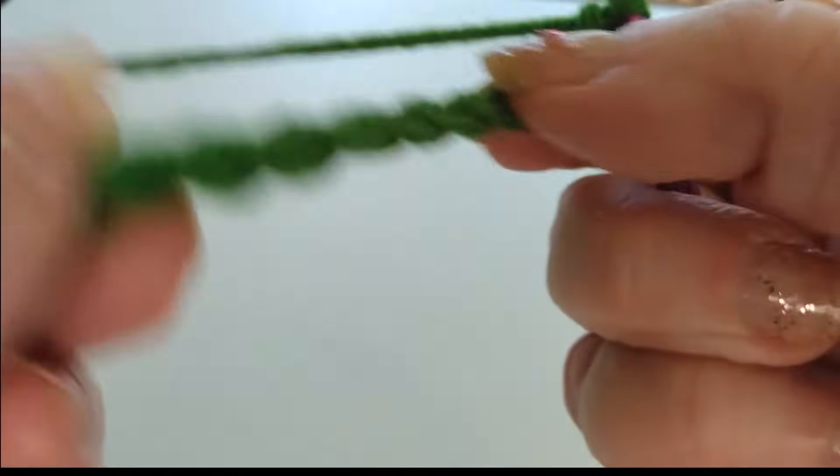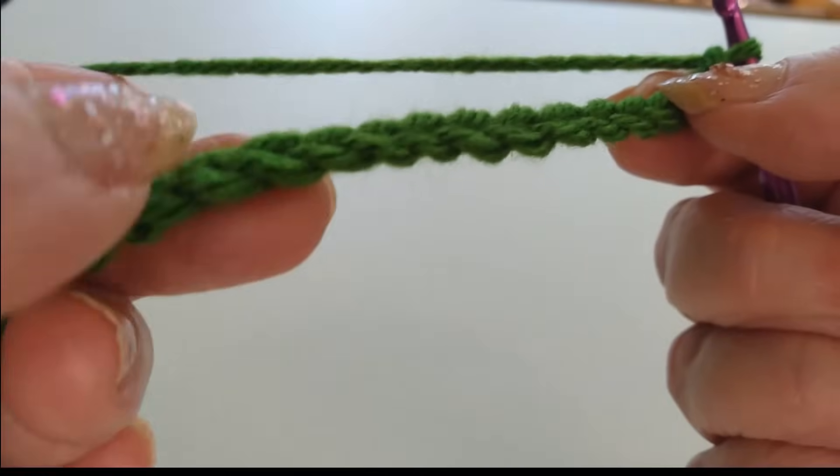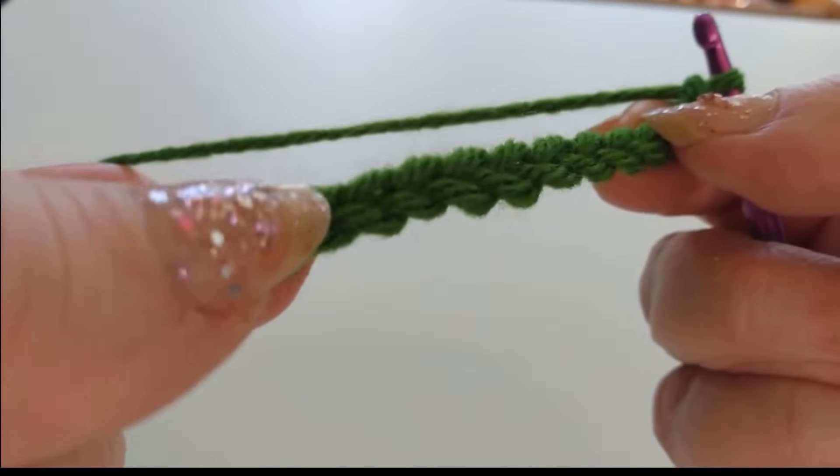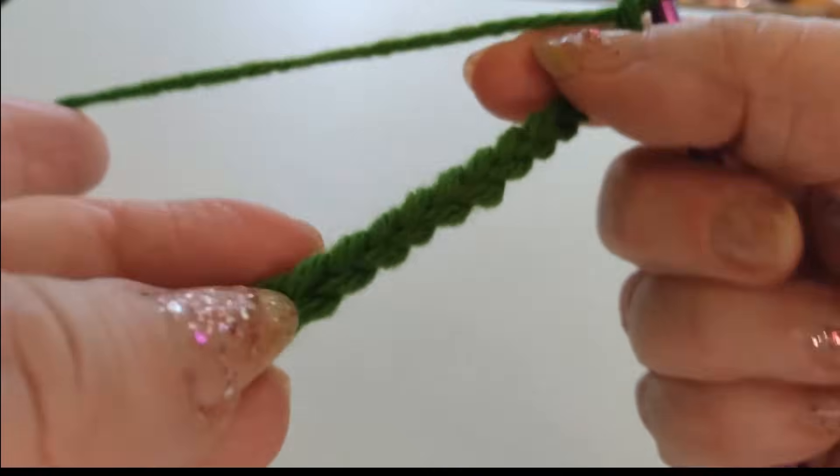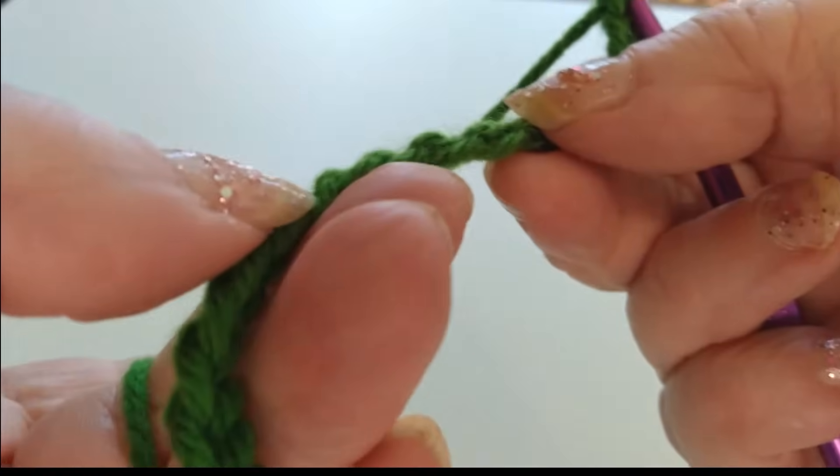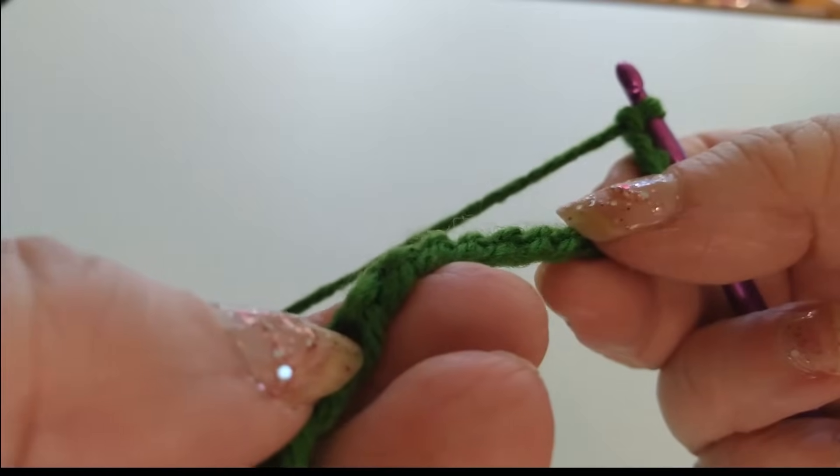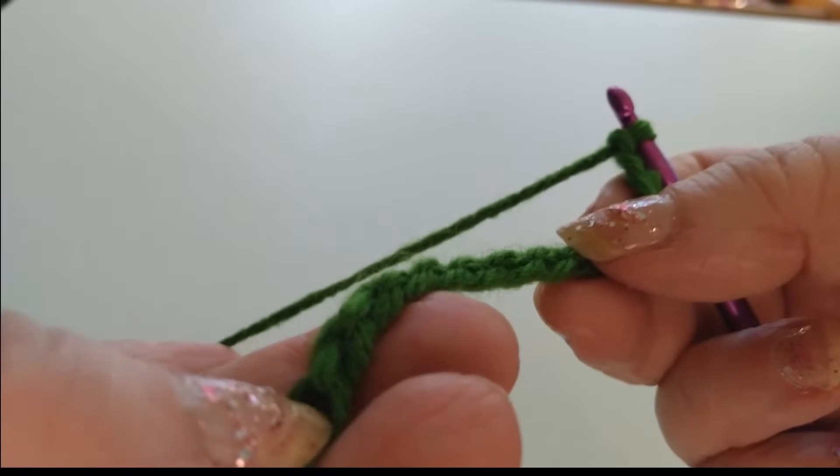See? This is, see how this chain is made up? This is the front of the chain. You see how it's made up of V's? That's your front. The back is made up of ridges right here. See how that is? Or bumps.